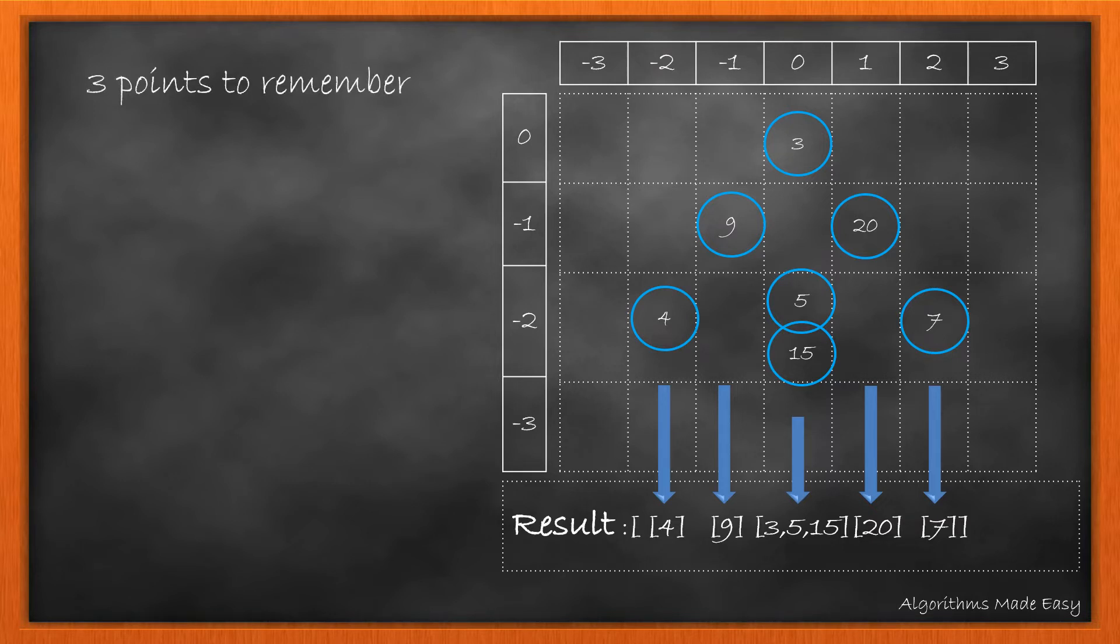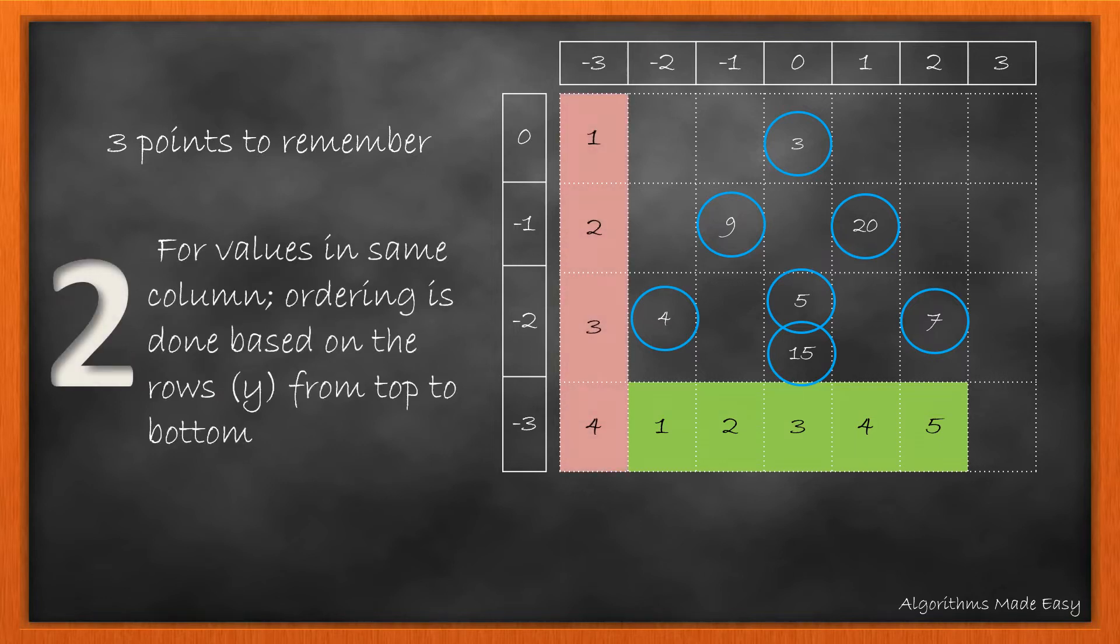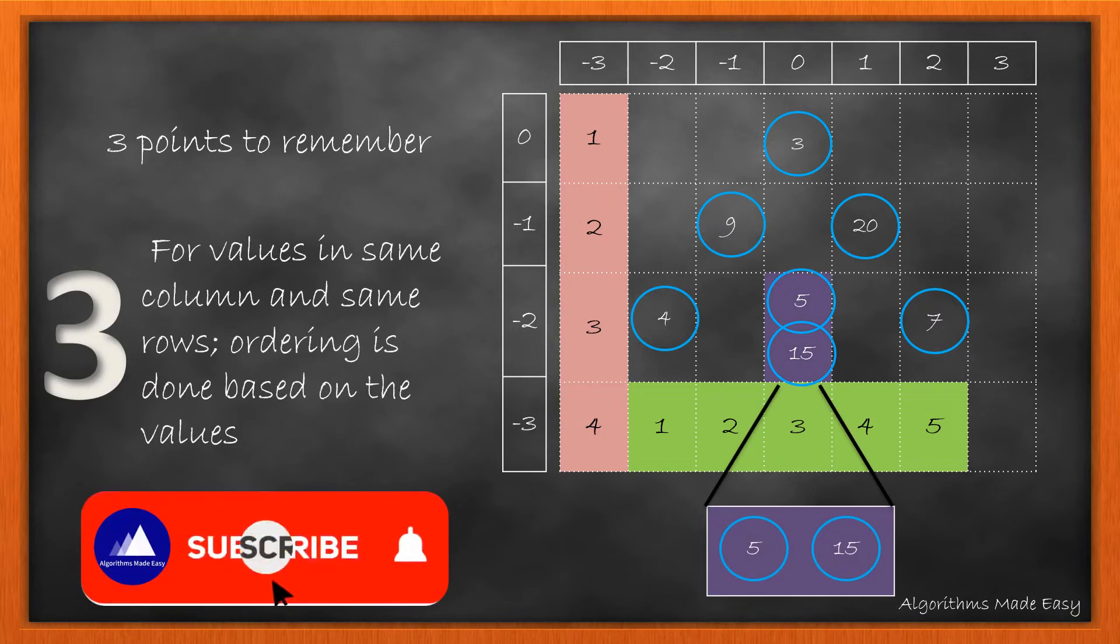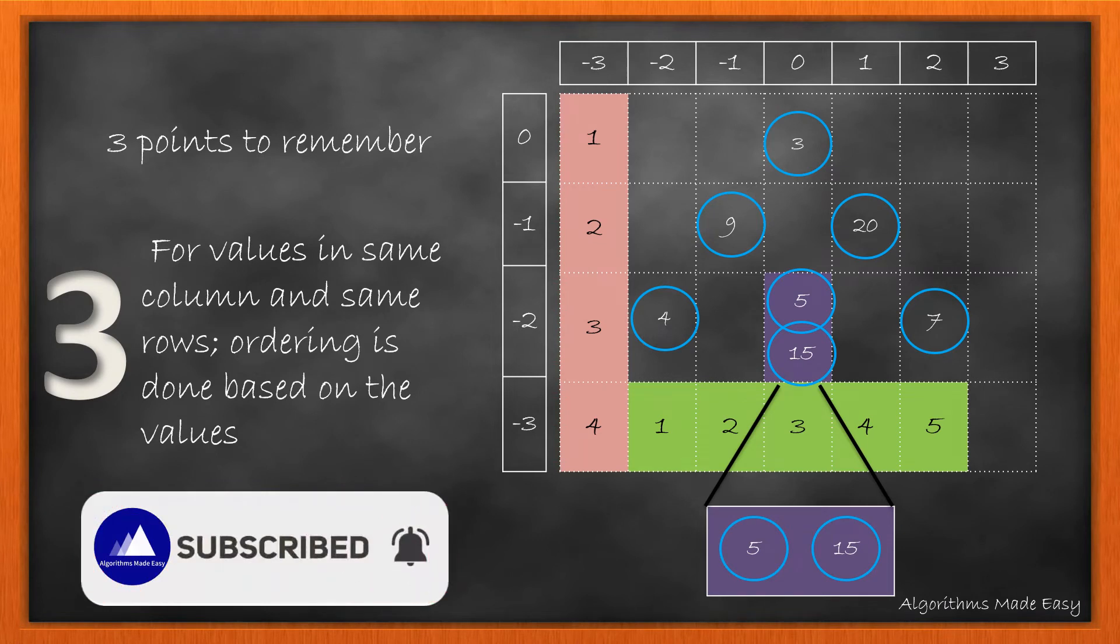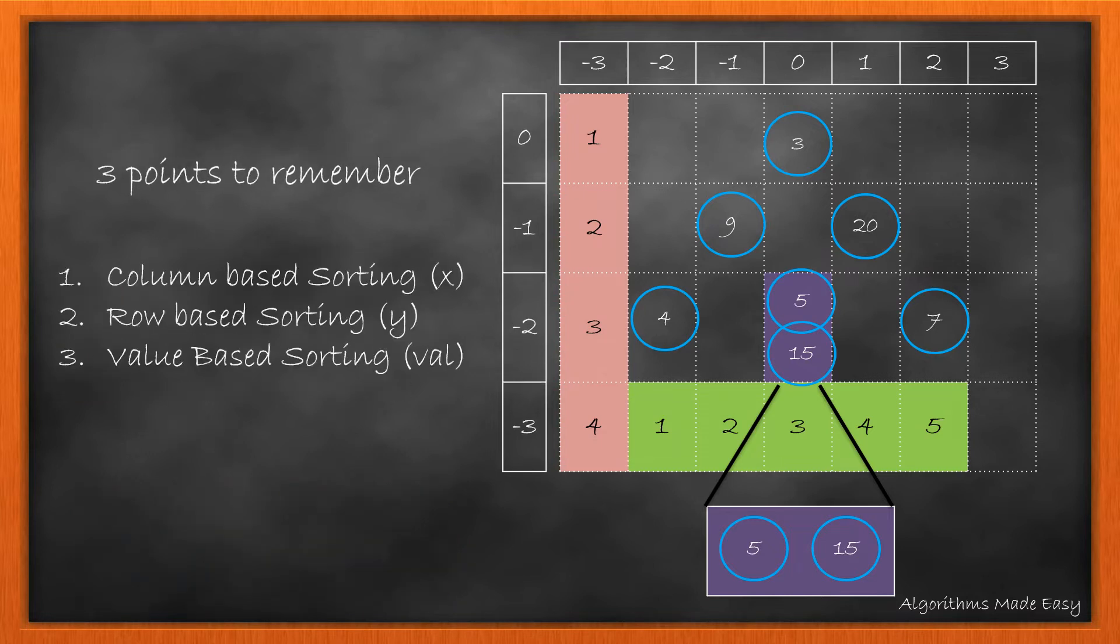Here, there are three things to remember or three points to consider. First, the ordering in the result is primarily done on basis of x-coordinate, starting with the smallest one. Second, for the values in same column, the ordering is done based on rows from top to bottom fashion. And third, for nodes with same x and y-coordinate, the one with the lower value must appear first. So, the sorting in this case will be based on the value of node.